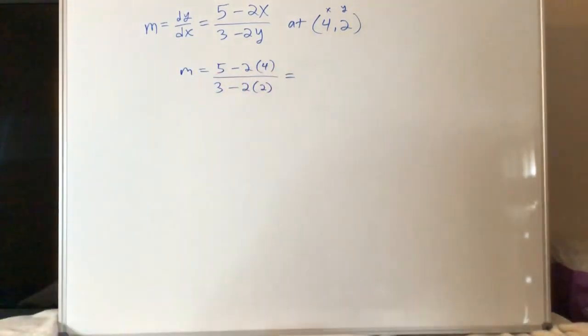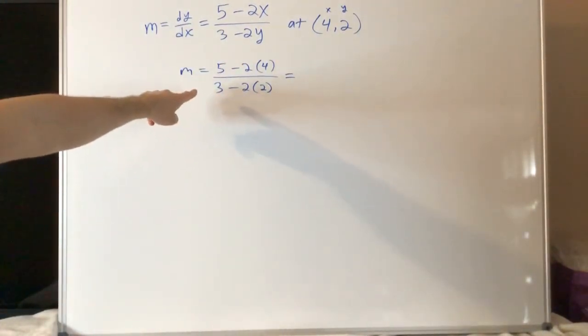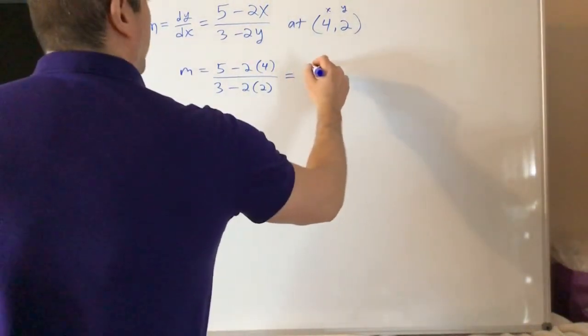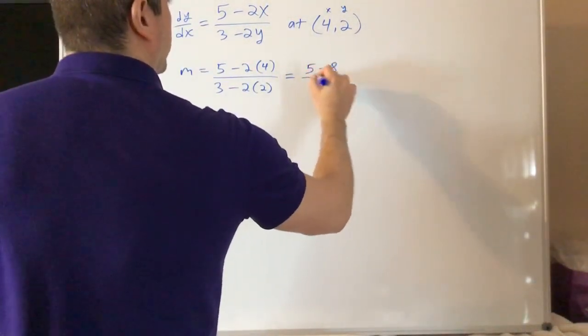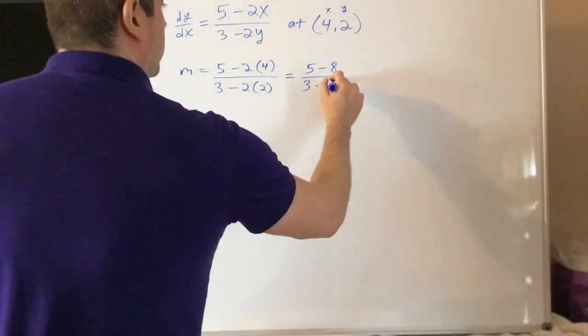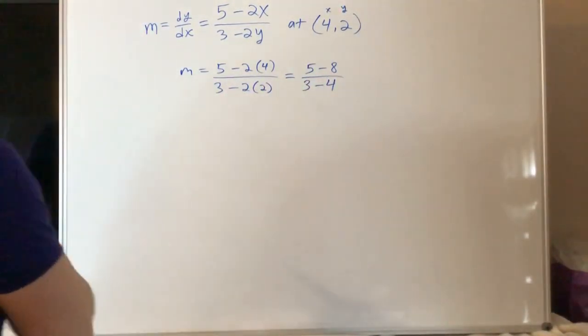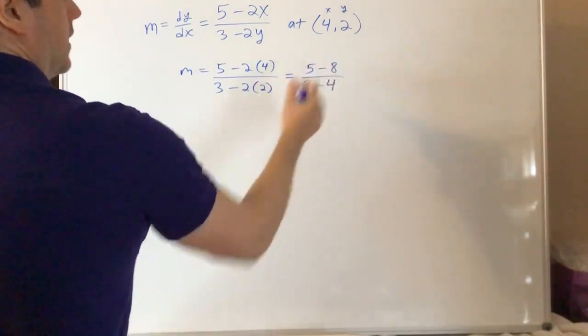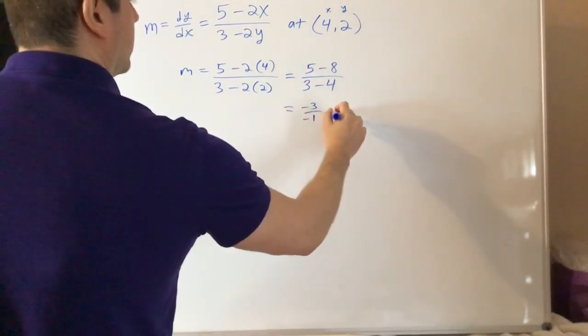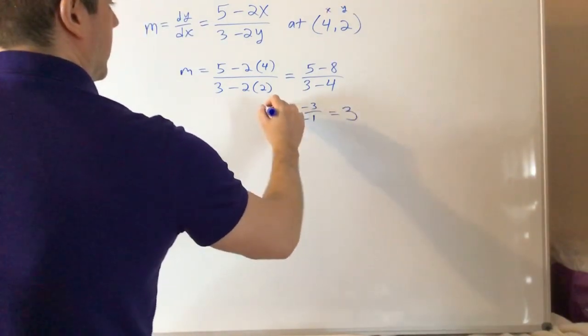Very often when you do this, you will get a fraction here. I rigged this one so that you don't, because I'm doing it. I want you to do the harder ones, as always. So you have 5 minus 8 on top. 3 take away 4 on the bottom. So over here, that's negative 3. 3 minus 4 is negative 1. That's my m.